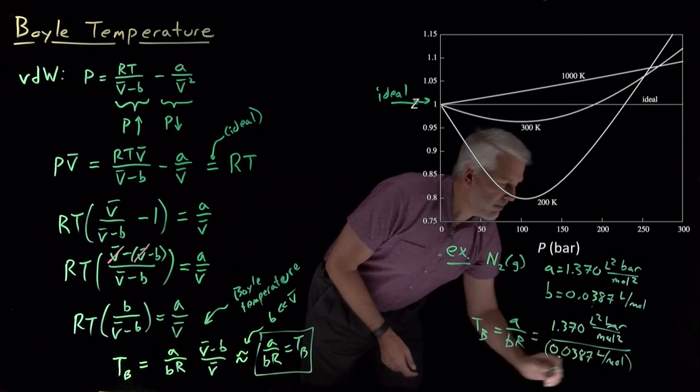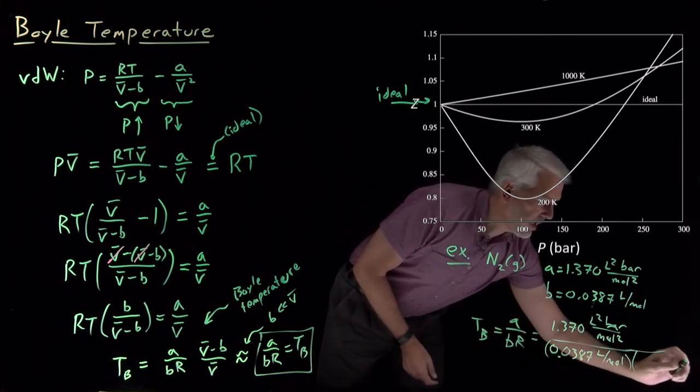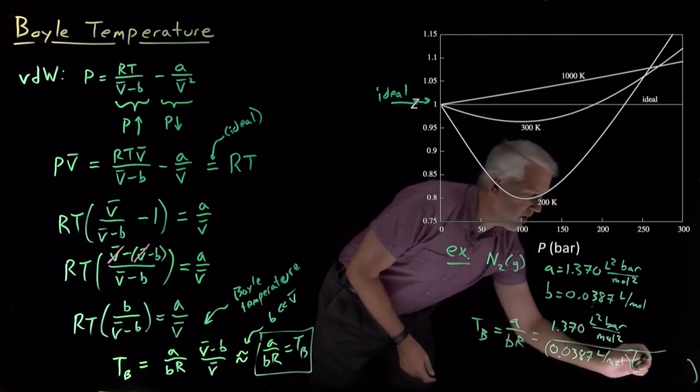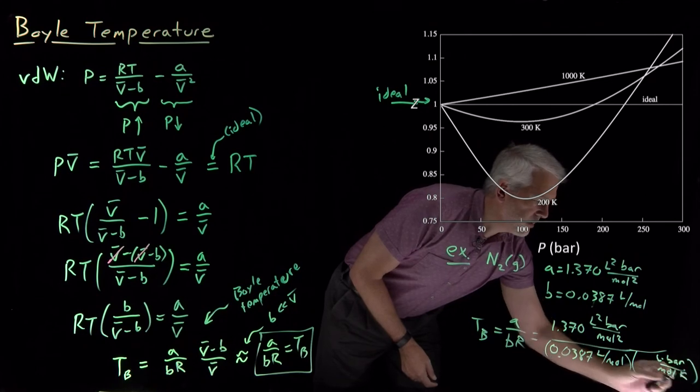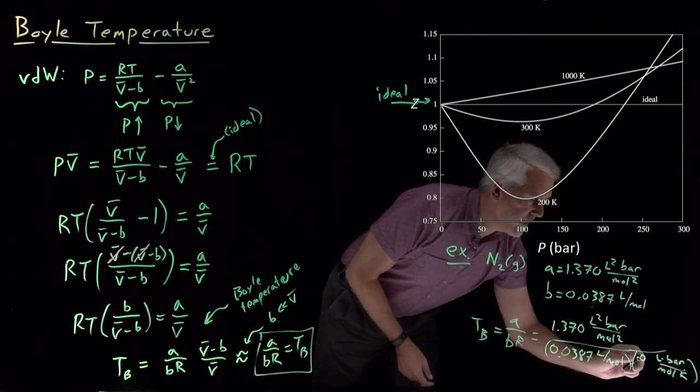So there's A and B. If I divide by R, I want to use a value for R that's in units of liters bar per mole Kelvin. So that's the value 0.08314.